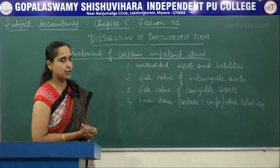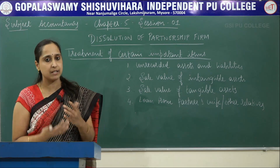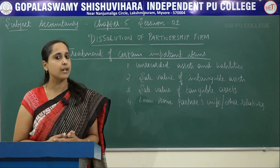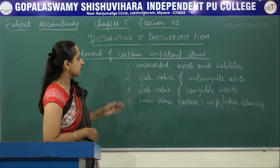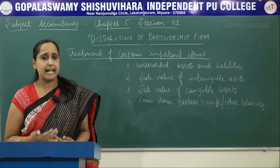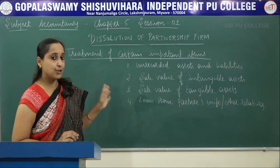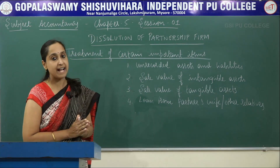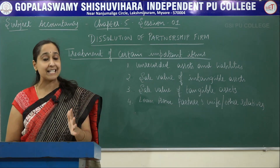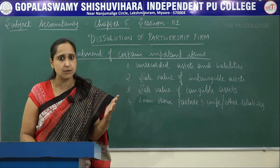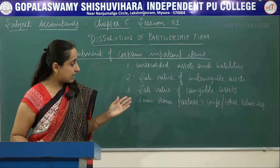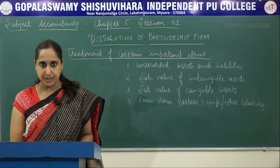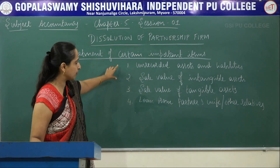Second item is the sale value of intangible assets. Intangible assets are those which you cannot see — like goodwill, patent, trademark, and copyright. It is assumed that they are valueless and usually not recorded in the books of accounts. Next is the sale value of tangible assets — like furniture, building, machinery, etc. It is assumed these values are realized and recorded in the books of accounts. Next is loan from a partner's wife or other relatives — it is usually treated as an external liability because the partner's wife or relatives are not partners in the firm. They are external liabilities, transferred to the Realization Account and paid by the firm.